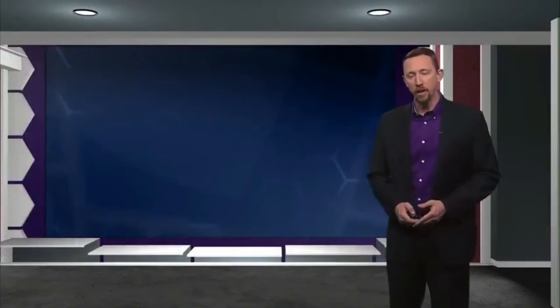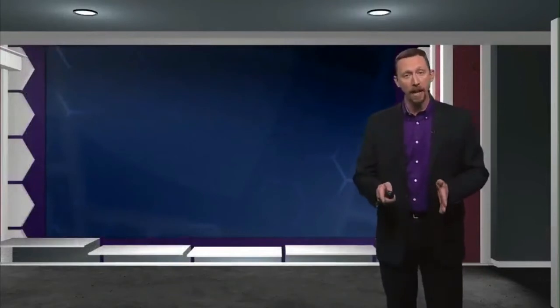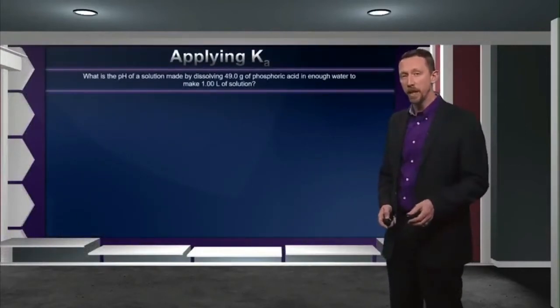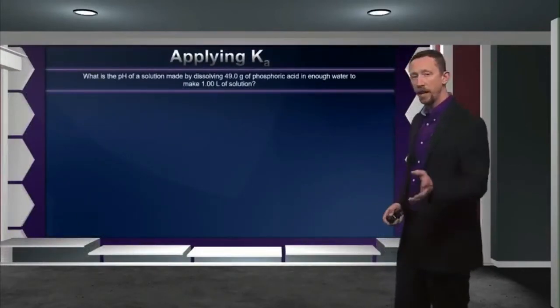Well, the good news is that most of the time they can be ignored for reasons we've already stated. If the Ka2 value is substantially lower than the Ka1 value, then it can be assumed that the second dissociation happens so rarely that it's not necessary to include it in an estimate of pH. Let me show you what I mean by that. Our goal in this case is to calculate the pH of a solution made by adding the neutral polyprotic acid to a solvent. Now to do this, we're going to approach it very much like we did monoprotic acids. Here's our problem: What's the pH of a solution made by dissolving 49.0 grams of phosphoric acid in enough water to make a liter of solution?